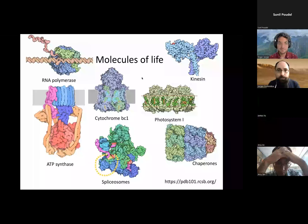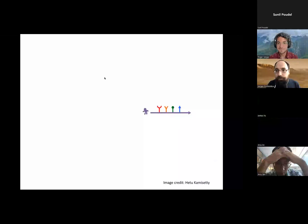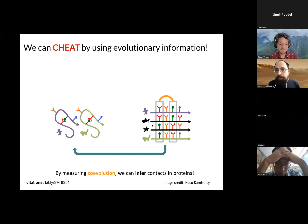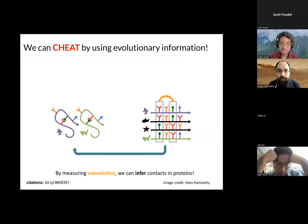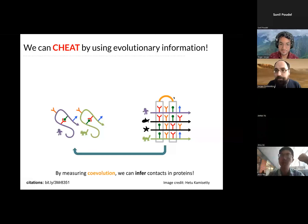So the question is: can we somehow cheat? Can we get around this problem? One way is to say, instead of using a single sequence and trying to predict it, you collect a whole bunch of related sequences and look for patterns of covariation. Given you're at Harvard, you probably know some work by Deborah Marks trying to use this kind of information for structural prediction, mutant effect prediction, and so on. The idea is you can look at mutations and pairs of mutations to tell you something about the structure.